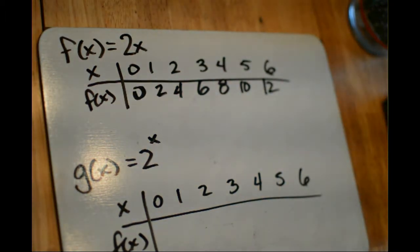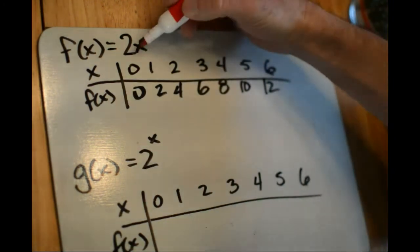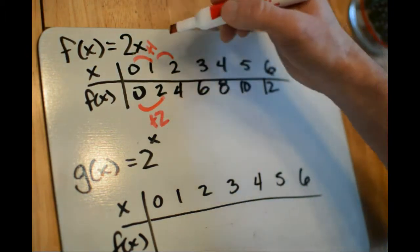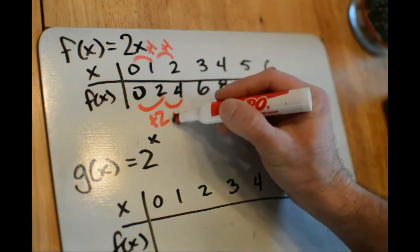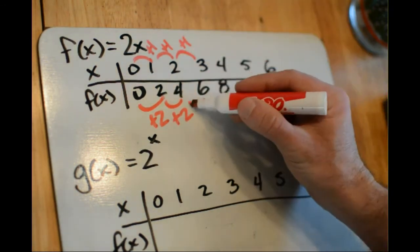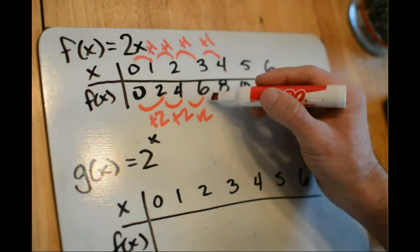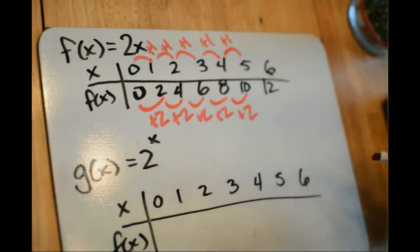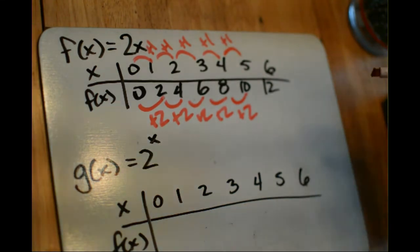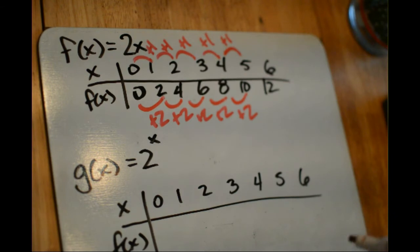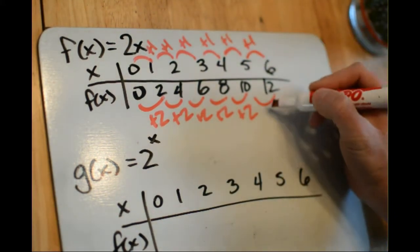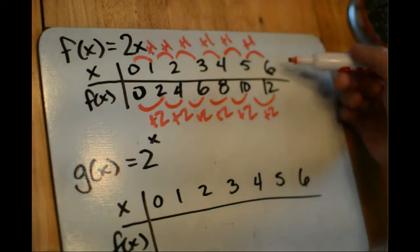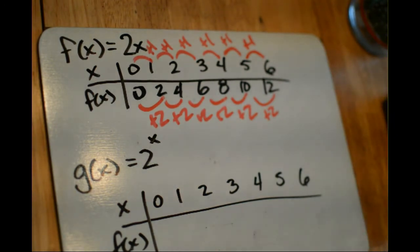There we have an example of linear growth. Whenever you increase x by 1, y or f of x is increased by 2. What makes this a linear pattern is that as you're increasing x by a constant amount, you're increasing y or f of x by a constant amount. Linear growth is really built upon a constant rate of change. In this case, whenever you increase x by 1, f of x increases by 2 — a rate of change of 2 that's constant.